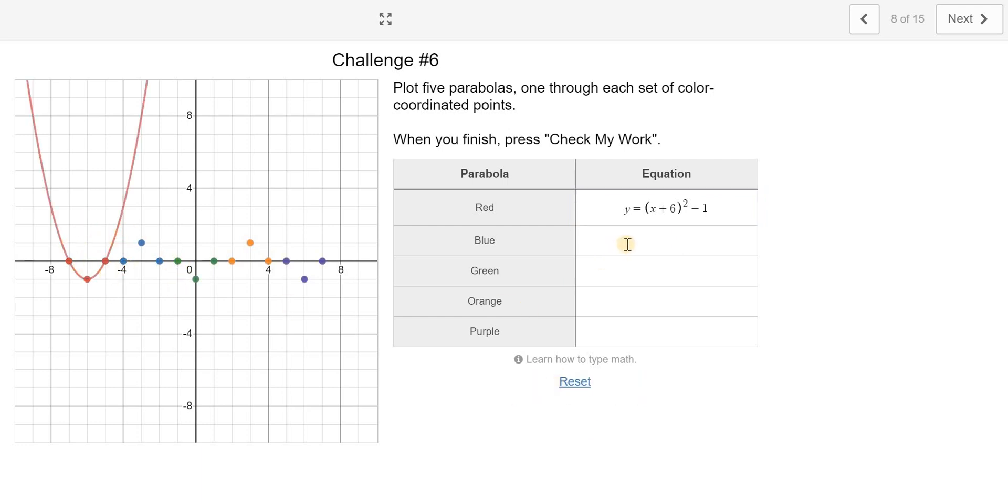But I need to finish the rest of these equations too. So all I'm going to do is be taking these and changing my vertex point, changing this here and this here, my h and my k. And then sometimes I'm going to need to put a negative at the front if it opens down.